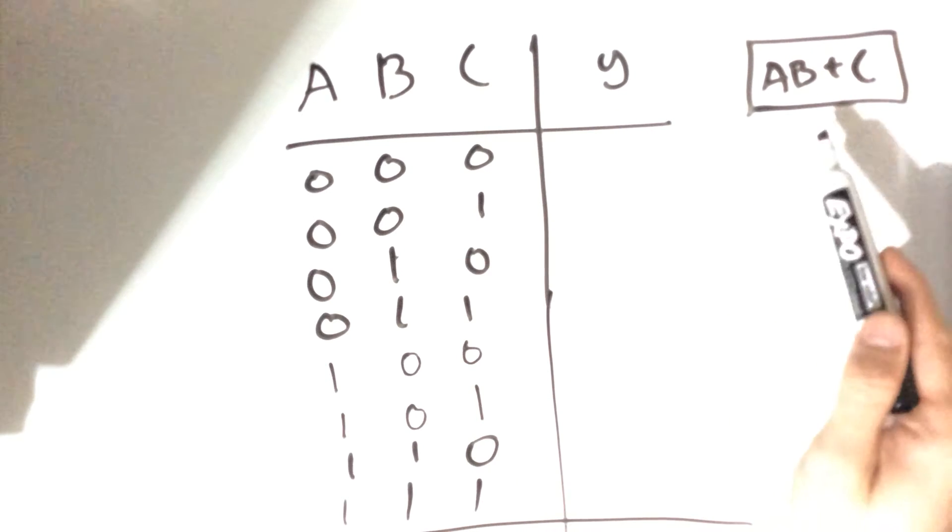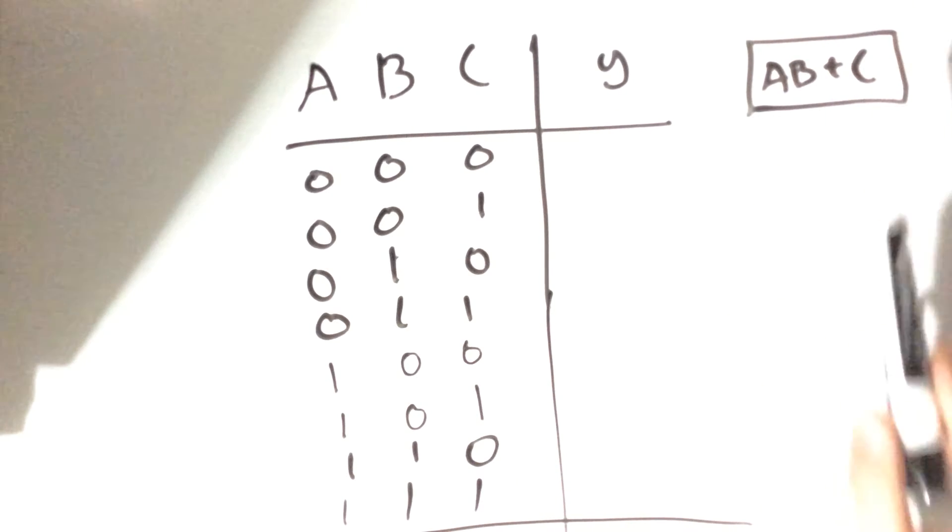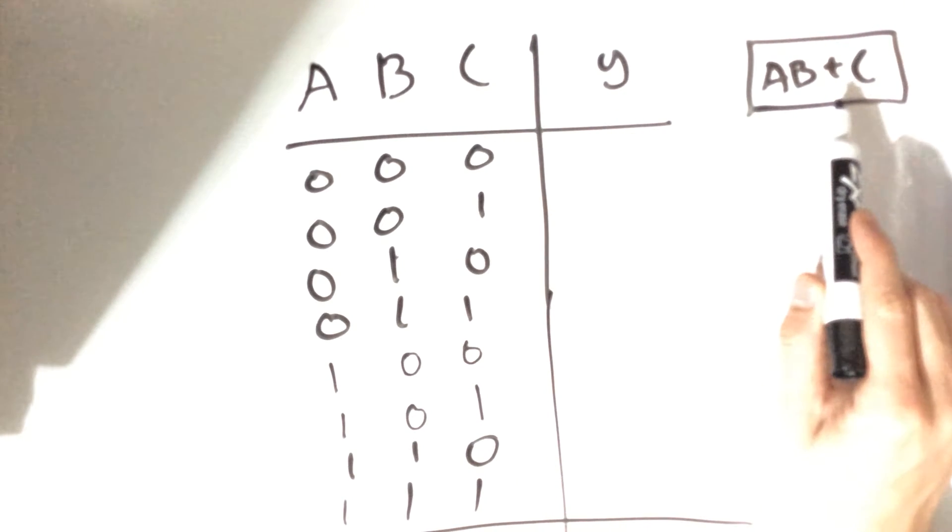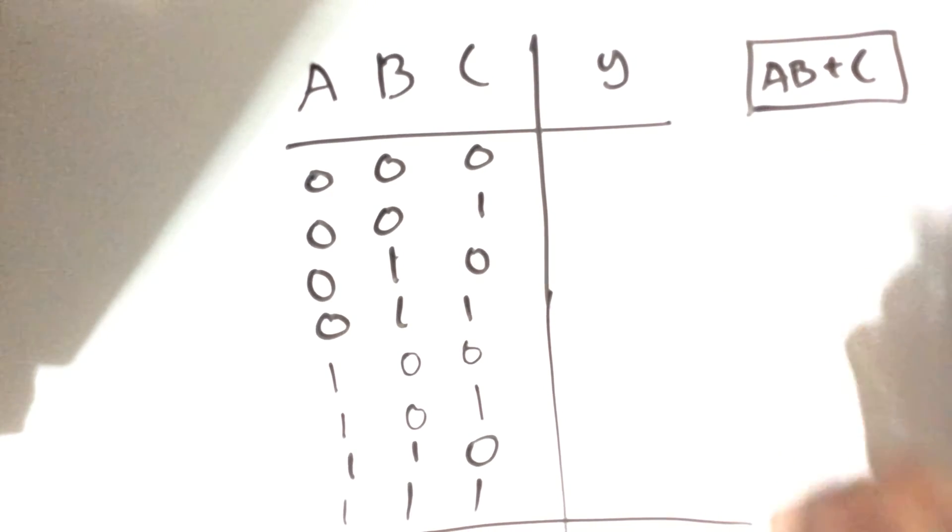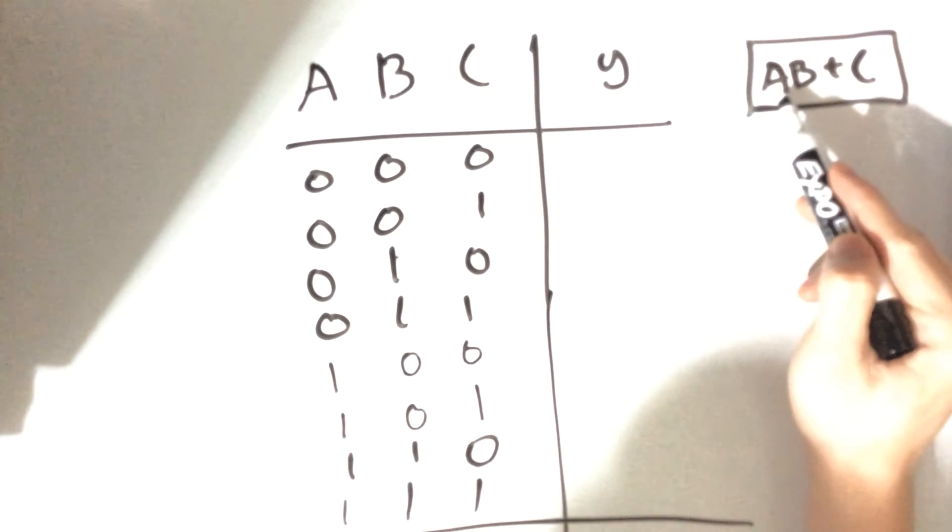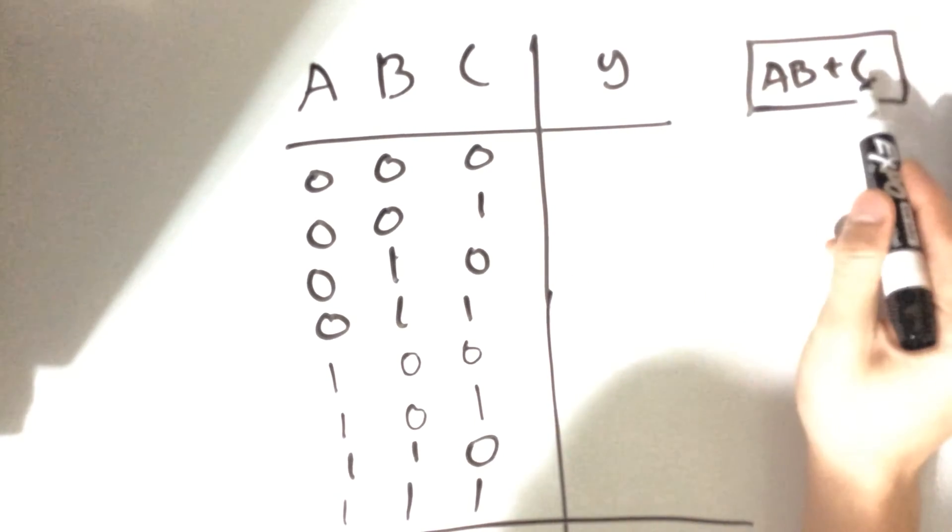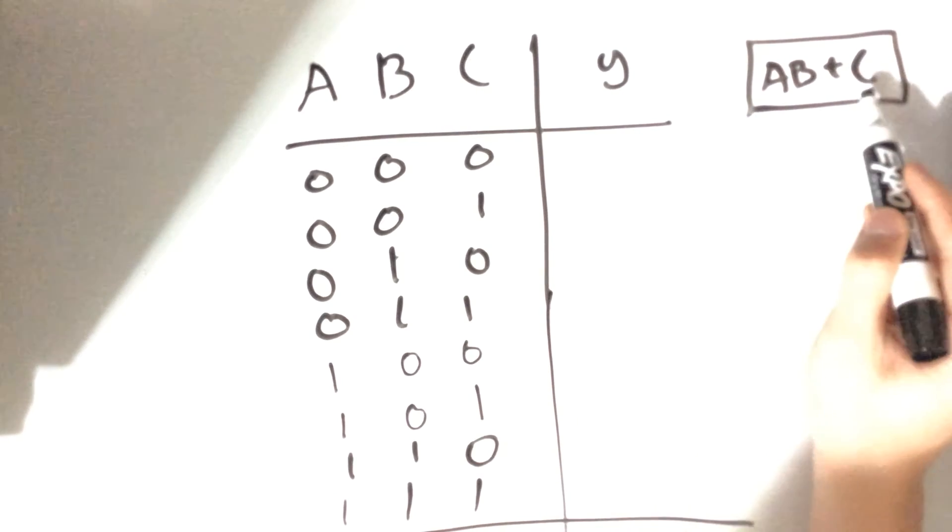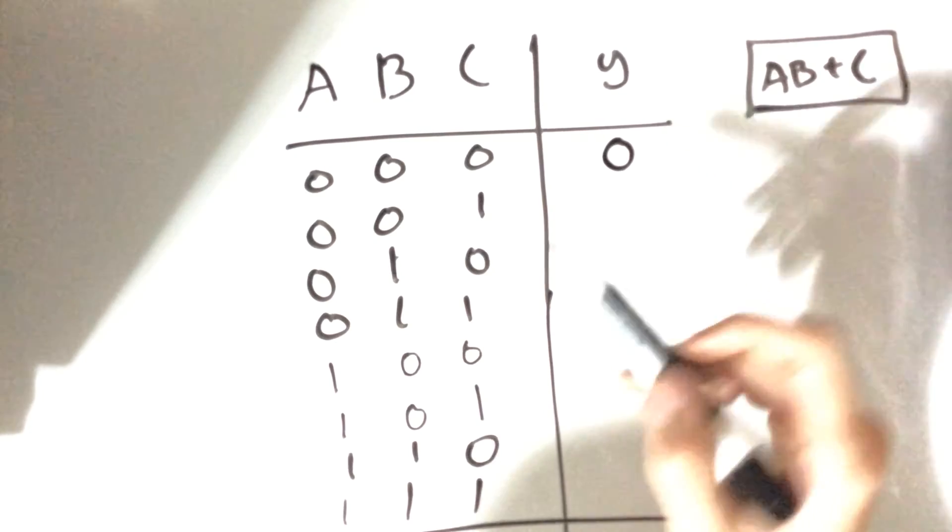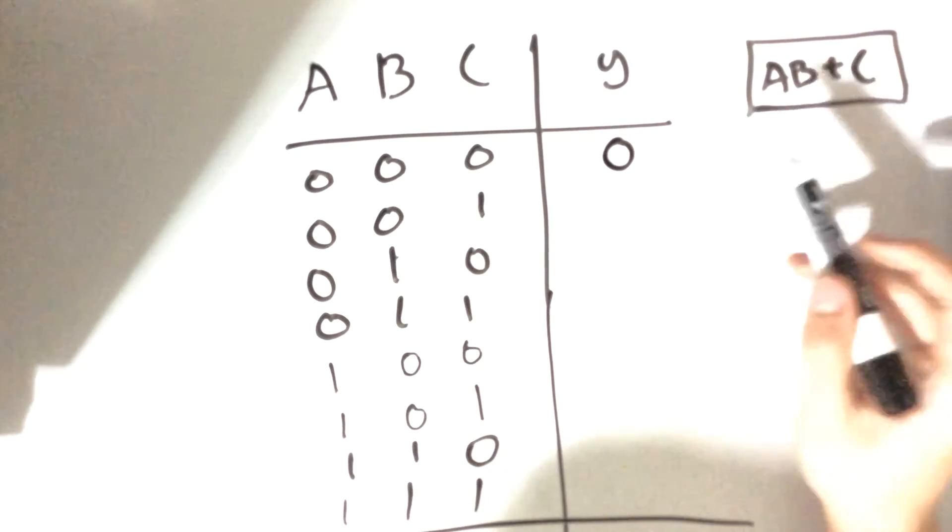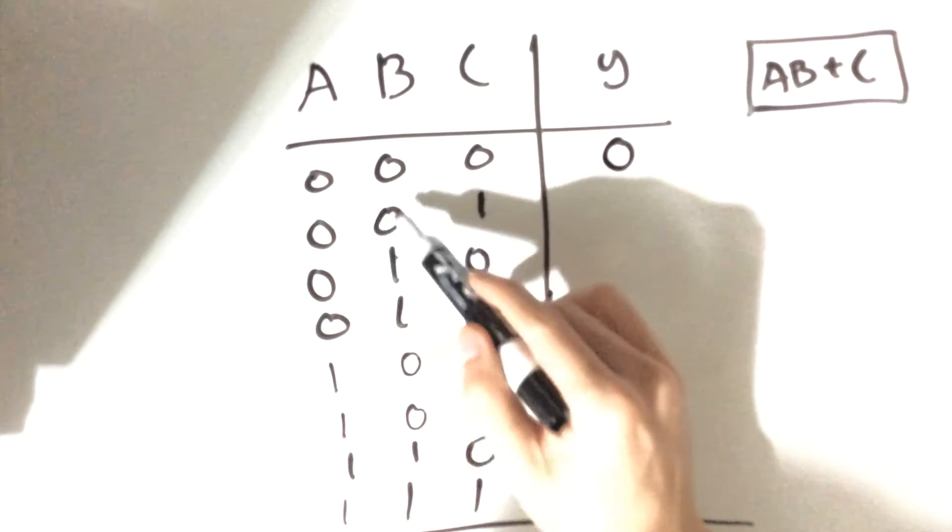Bear in mind these are not really pluses and that's not really multiplication—those are just representations for AND and OR. In this case we would have 0 and 0, or 0, and that gives us the value of 0.